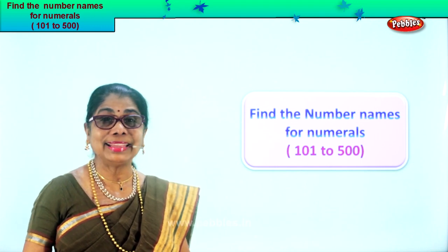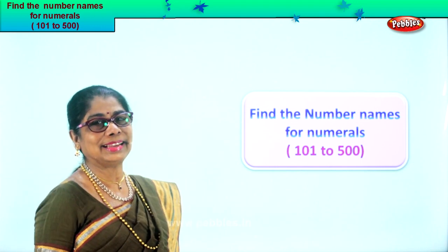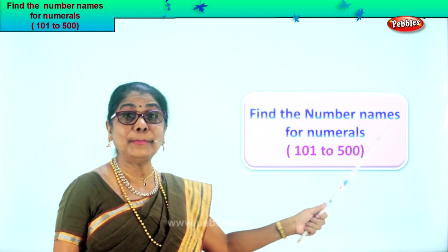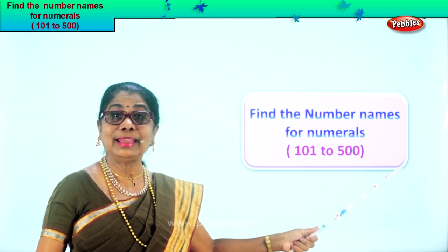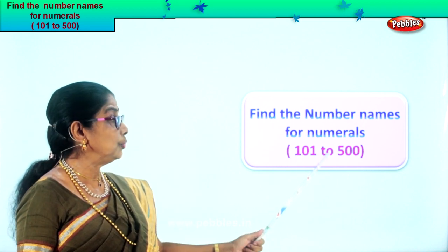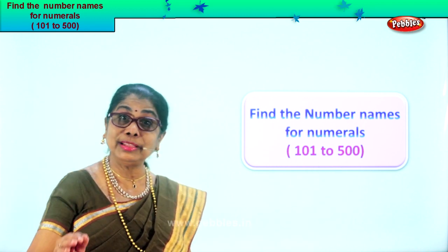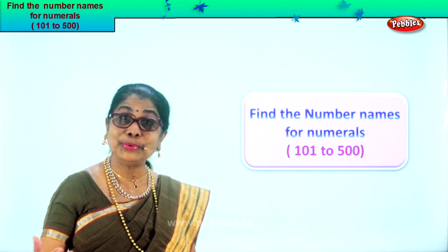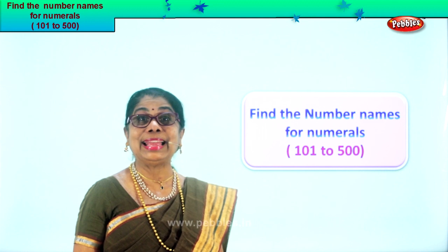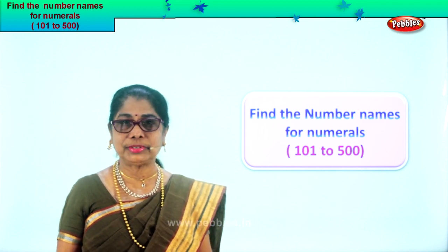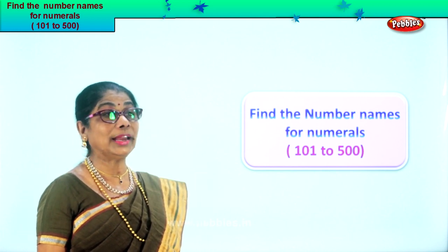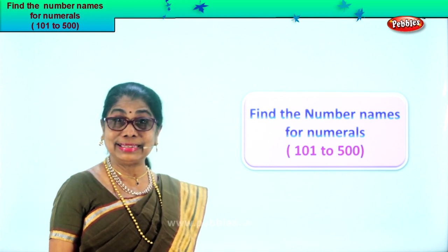Hi children, here's an exercise that you're going to enjoy. Find the number name. You're given the numeral from 101 to 500. You're given the numeral and you're going to write the name of that numeral — number name. It's very interesting, I hope you'll enjoy. Here we are. Let's look at our first exercise.